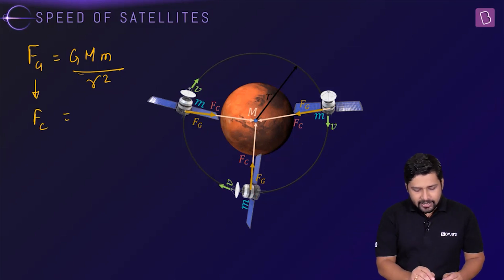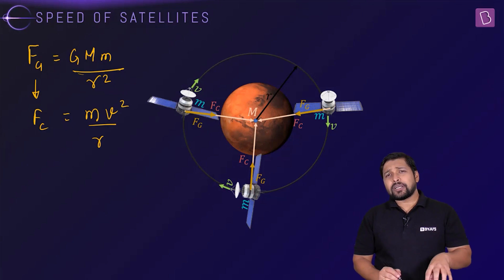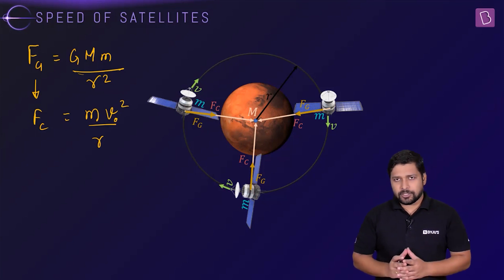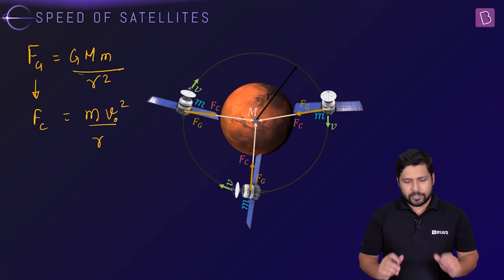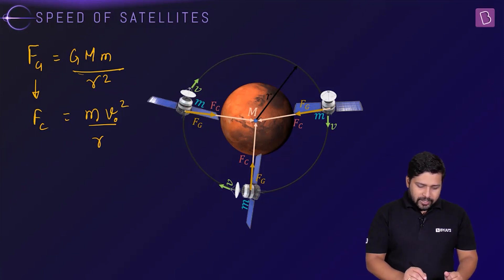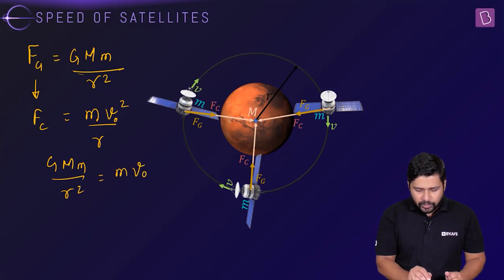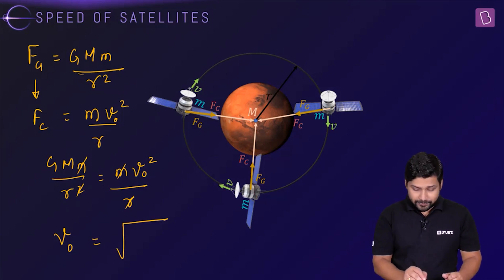The centripetal force formula is m·v² / r, where v is the orbital velocity. Equating the two: G·M·m / r² = m·v₀² / r. The r and m cancel on both sides, giving us the orbital velocity formula: v₀ = √(GM/r).